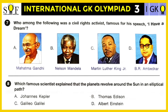Question number seven: Who among the following was a civil rights activist famous for his speech 'I Have a Dream' — Mahatma Gandhi, Nelson Mandela, Martin Luther King Jr., or B.R. Ambedkar? The correct answer is Martin Luther King Jr., who delivered the iconic speech 'I Have a Dream' for racial equality.